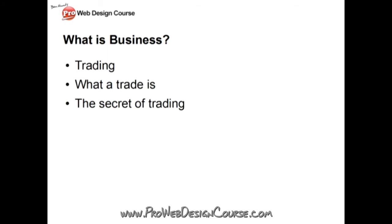The storekeeper values the money you give him more than the product he's selling. He paid less for the product than you're giving him — he's profiting, getting what he wants, which is money. You're getting what you want, which is bread or wine. You're getting something of higher value to you than what you're giving away, and the storekeeper is getting something of higher value to him than what he's giving away. When those things are true, that's when you get a trade.